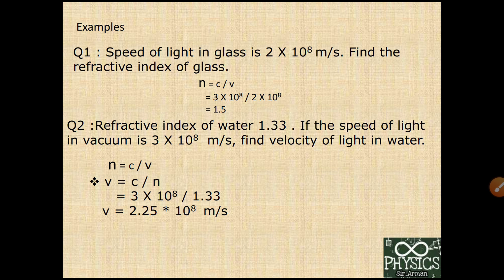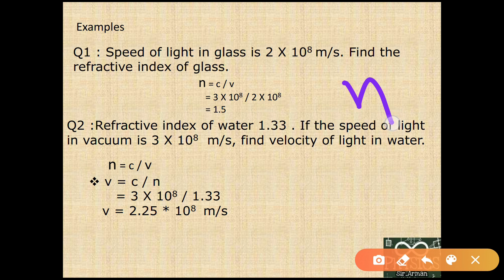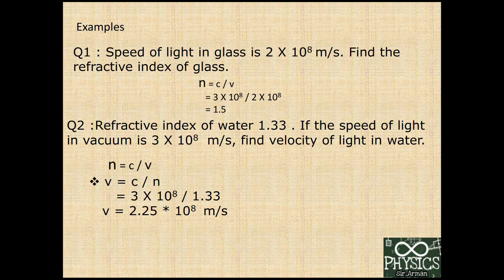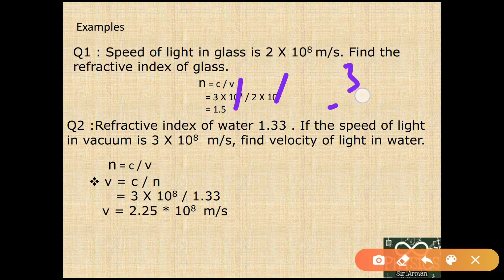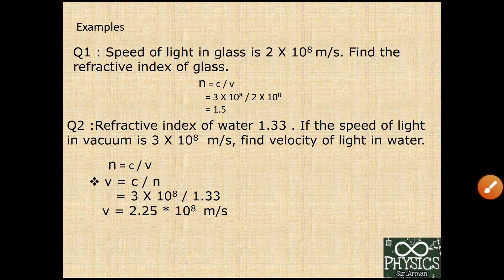Question 1: The speed of light in glass is 2×10⁸ m/s. Find the refractive index of glass. Using the formula η = c/v, where c = 3×10⁸ m/s, we get η = 3×10⁸ / 2×10⁸ = 1.5. So the refractive index of glass is 1.5, meaning the speed of light decreases by 1.5 times when entering glass.